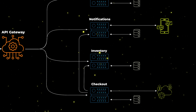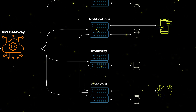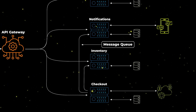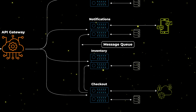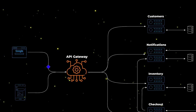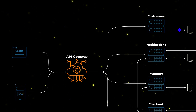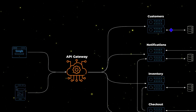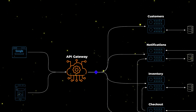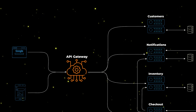Because this notification process is not on the critical path, it can be done asynchronously, so we can use a message queue to achieve that. Finally, the last microservice has the primary role of managing customers, authentication and authorization flows, and other customer-related aspects.